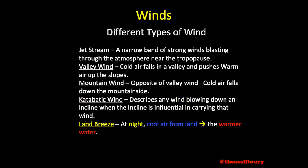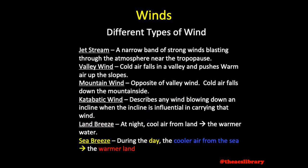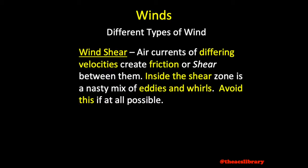A land breeze occurs at night when cooler air from the land flows toward the sea, and a sea breeze occurs during the day as the cooler air from the water returns to land. Wind shear occurs when air currents of differing velocities create friction or shear between them. Inside the shear zone is a nasty mix of eddies and whirls — avoid this if at all possible.